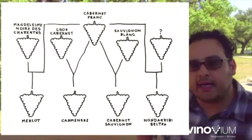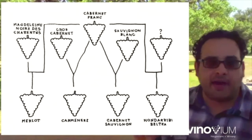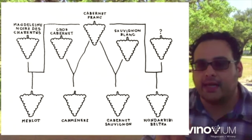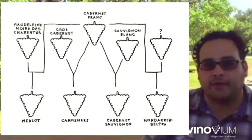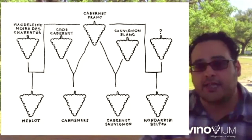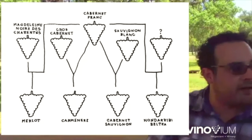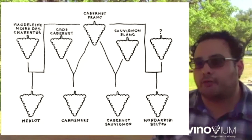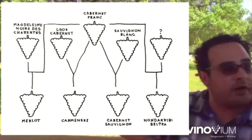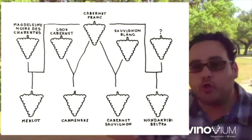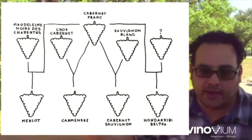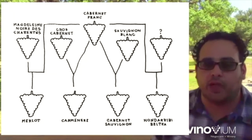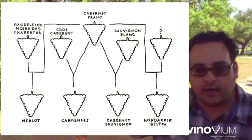Cabernet Franc is actually a parent varietal to both Cabernet Sauvignon and Merlot, but it does so in two different ways and at two different times. Interestingly, the mutations or crossings of Cabernet Franc occur every time there's a cooling or warming trend in history. Cabernet Sauvignon emerges during a cooling trend, and Merlot during a warming trend.